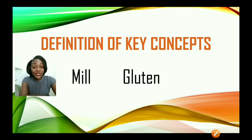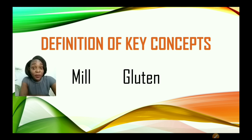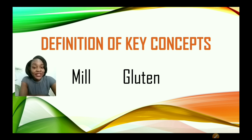Now, definition of key terms. We're looking at meal and gluten. Meal can be used as both a noun and a verb. As a noun, meal refers to the factory or place where the production of flour takes place. It can also refer to the processing of wheat to produce flour. Gluten refers to the protein that is found in flour.